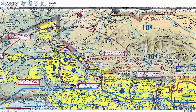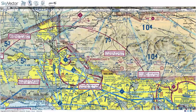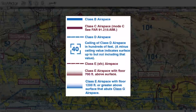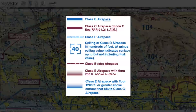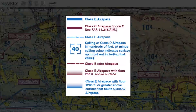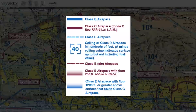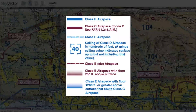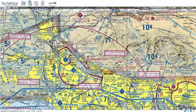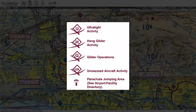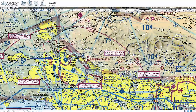We're going to gloss over airspace — we do have another video on that. You'll be reading different airspace on sectional charts: Class Bravo, Charlie, Delta, Echo, and Gulf airspace. There are also other types of miscellaneous airspace, such as parachute jumping, glider operations, and more.